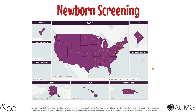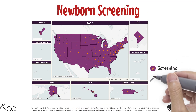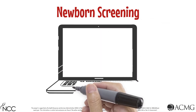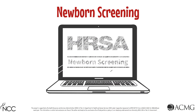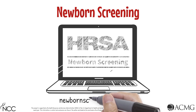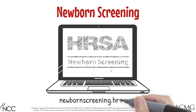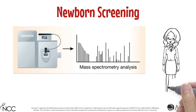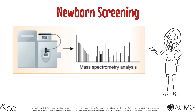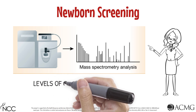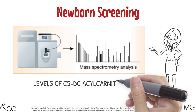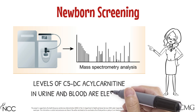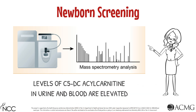All states in the United States provide newborn screening for Glutaric Acidemia Type 1. A good resource for checking a state's newborn screening panel is the newbornscreening.hrsa.gov website. Screening for Glutaric Acidemia Type 1 is performed by examining the levels of glutarylcarnitine, also known as C5DC acylcarnitine, which is elevated in individuals with this condition.